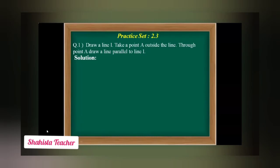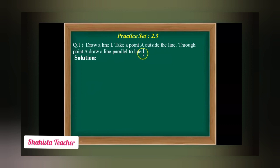Students, let's study how to draw a line parallel to a given line. Practice Set 2.3 is based on drawing a line parallel to a given line. Question number one says: draw line L, take a point A outside the line, and through point A draw a line parallel to line L.